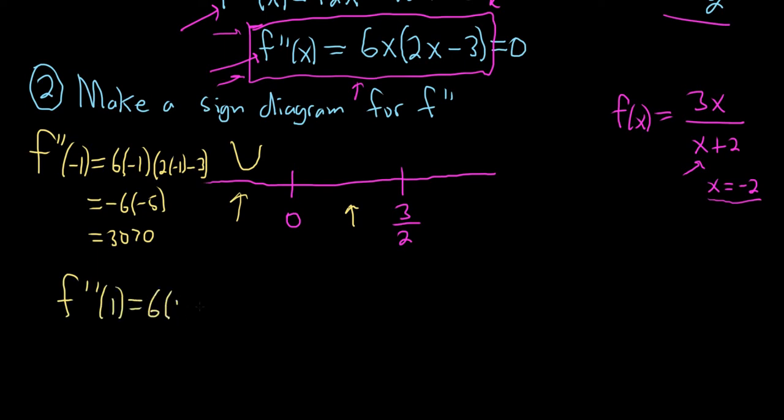This is 6 times 1, this will be 2 times 1 minus 3. So it'll be 6 times negative 1, so that's negative 6. That's less than 0, so here it'll be concave down.